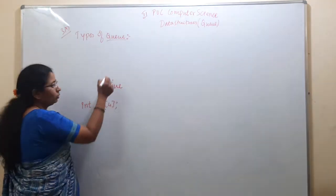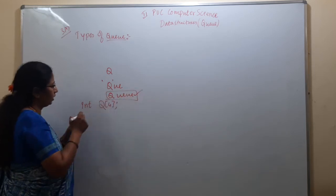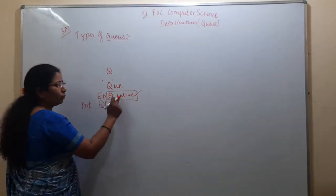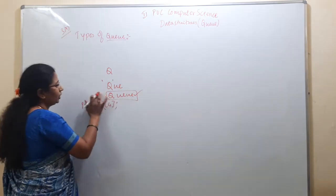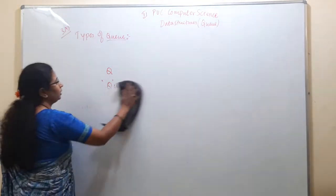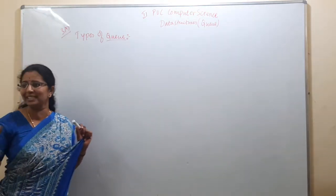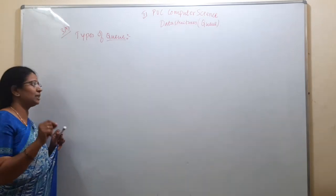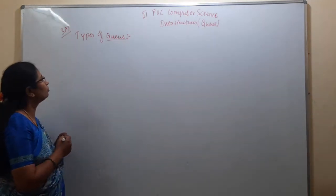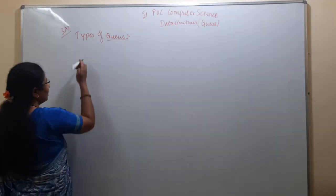Similarly, for enqueue write the complete spelling: E, N, Q, U, E, U, E. For dequeue write: D, E, Q, U, E, U, E. The spelling is very important. Those who are scoring 69 or 70 marks lose marks for these technical words. Please remember all technical terms — technical words only give you complete marks. What we have discussed so far is called a simple queue.